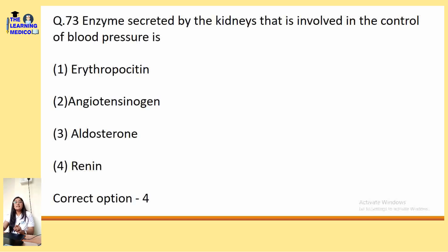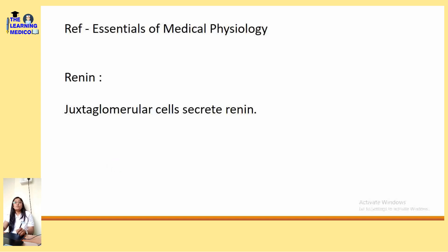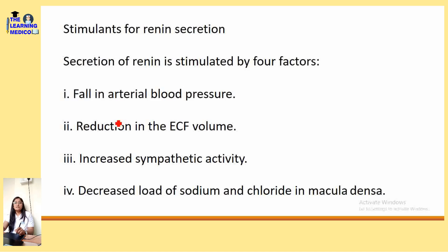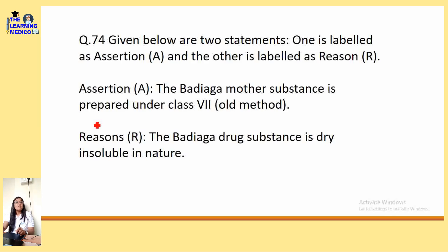The enzyme secreted by the kidneys involved in control of blood pressure is Renin — option number 4. Renin is secreted by the juxtaglomerular cells of the kidney. Stimulants for renin secretion include fall in arterial blood pressure, reduction in ECF volume, increased sympathetic activity, and decreased load of sodium and chlorine in the macula densa.